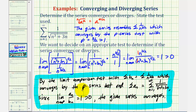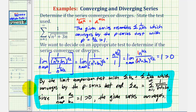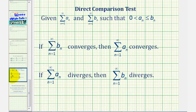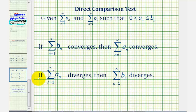Now let's also determine that the given series converges using the direct comparison test. Given the sum of a sub n and the sum of b sub n such that a sub n is greater than zero and less than or equal to b sub n, then if the sum of b sub n converges, then so does the sum of a sub n. And if the sum of a sub n diverges, then the sum of b sub n also diverges.